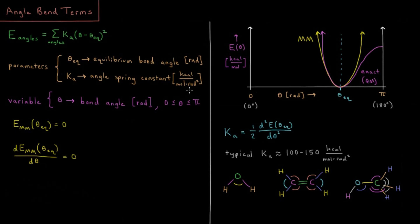Note that the values in the program being demonstrated are in kcal per mole per radian squared, rather than degrees squared. The equilibrium bond angle may be indicated in either radians or degrees depending on whether you apply the interconversion factor. Typically it's safest to work exclusively in radians, though we'll do some interchanging between radians and degrees. The bond angle variable is also determined in radians and can range between zero and pi, or zero and 180 degrees.